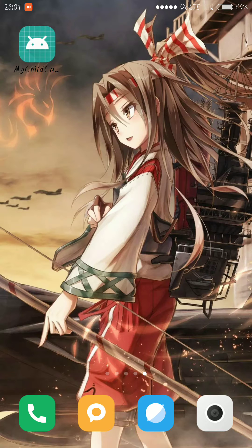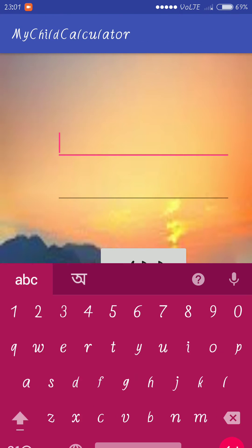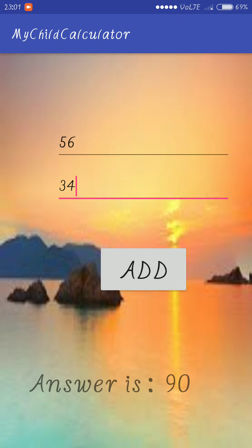Let's see the demo first so you can get what exactly we are going to make. Let's open the app — here is the list view, you can see. This is the four functions: you can basically perform addition, subtraction, multiplication, and division here. And this quit button will make us exit from the app. Let's check it out — 56, 34, just random numbers.